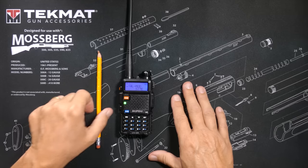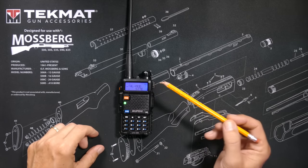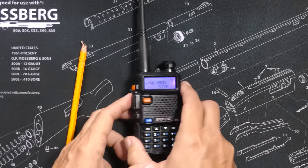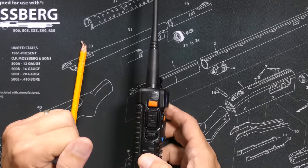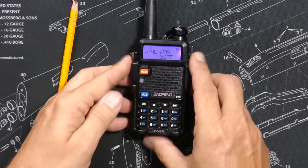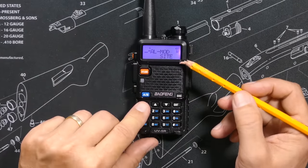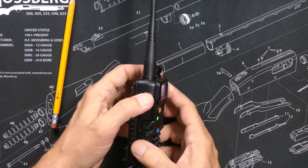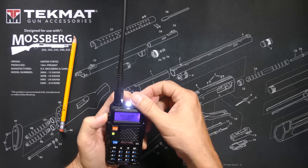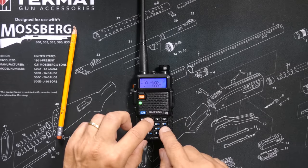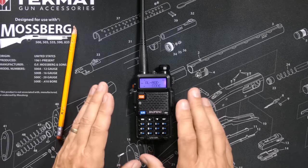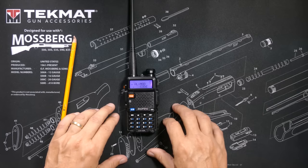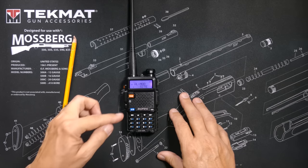Menu item number 32: AL MOD, which means alarm mode. This setting controls what happens when you press the orange alarm button. So please, for the love of Xenu, set this to Site. This will ensure that when you or your kids accidentally press the orange alarm button, only you can hear it. Either of the other two settings — tone or code — will make that alarm sound transmit over whatever channel or frequency the radio is currently on, and this causes much rage for anyone who might be listening.